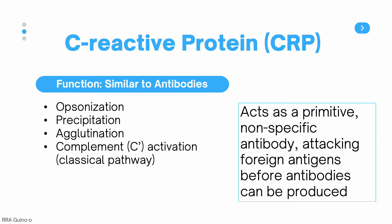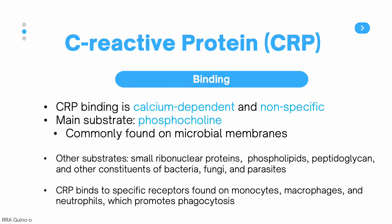What does CRP do? It functions similarly to antibodies in that it is capable of opsonization, precipitation, agglutination, and even complement activation in the classical pathway. Because of these functions, CRP is thought to act as a primitive, non-specific antibody that attacks foreign antigens before actual antibodies can be produced. One way CRP differs from antibodies is that its binding is calcium-dependent and non-specific, meaning it can bind to a number of different substrates, compared to an antibody which can only bind to one specific epitope.